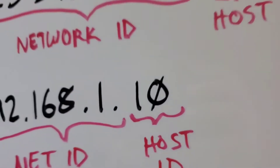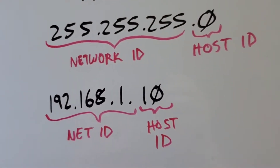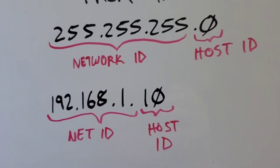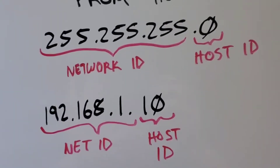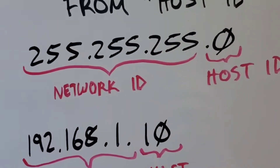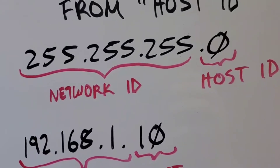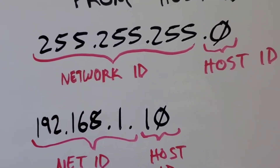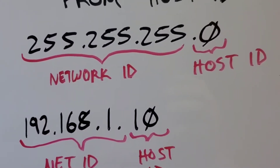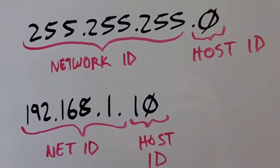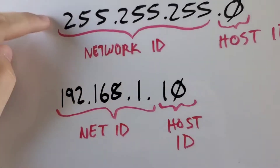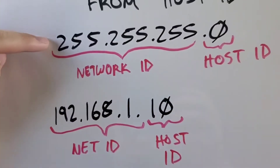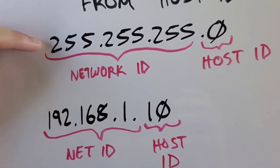So 192.168.1.10 matched with a subnet mask of 255.255.255.0 means that all the hosts are separated by that last octet, and that is typically what you'll find on most home network routers. There is more that goes into the subnet mask involving math and binary, but that's outside the scope of this video.